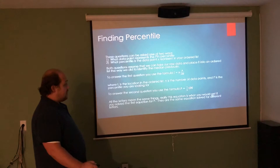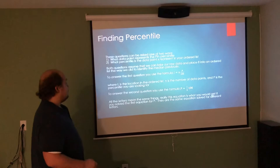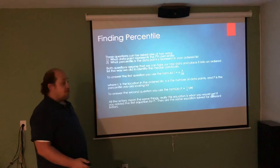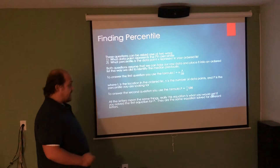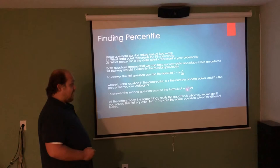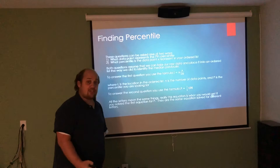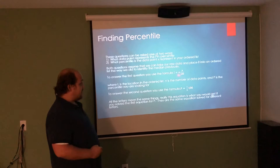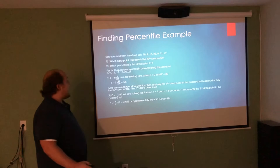To answer a question like what data point represents the pth percentile, the way that we're going to do that is take the location of a data point equals the number of data points times the pth percentile divided by 100. Where l is the location in the ordered list, n is the total number of data points, and p is the percentile I'm looking for. If I get something like the second question, what percentile is the data point x, to find that percentile, we take what the location is in the ordered list of the data point divided by n data points that there are times 100 to find the percentile.